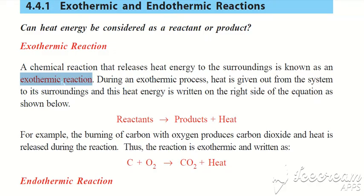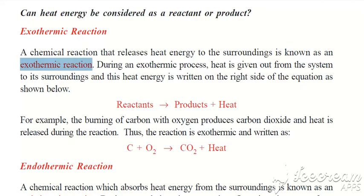During an exothermic process, heat is given out from the system to its surroundings. In the exothermic process, heat is released from the chemical reaction. This heat is written on the right side of the equation as shown below.